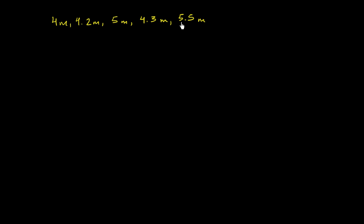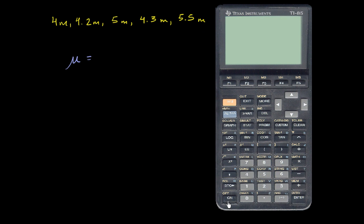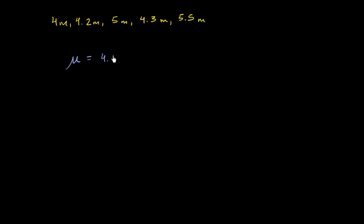Let's come up with some parameters for this population. The first one is a measure of central tendency, and probably the most popular one is the arithmetic mean. We're calculating this for the population, so we'll use mu. We just add all the data points up and divide by 5: 4 plus 4.2 plus 5 plus 4.3 plus 5.5, then divide by 5. That gives us an arithmetic mean of 4.6 meters.